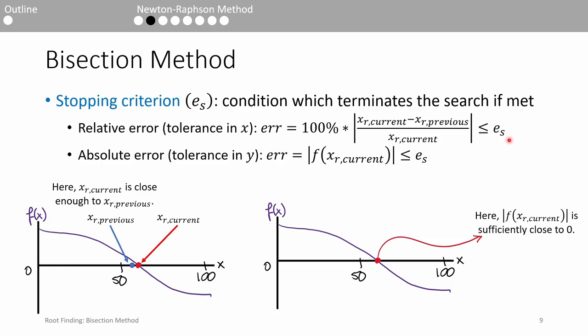we stop the algorithm. Intuitively, a small percent change in x means we're probably very close to the root. The other condition we can use is a tolerance in the function value. After every iteration, we evaluate the absolute value of f(x_r). If it's less than or equal to some tolerance, we can stop the search. Intuitively, this means that the function evaluated at the root must be close enough to zero. Which stopping criterion to use will be specified in the problem statement,